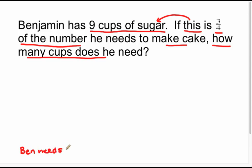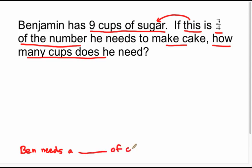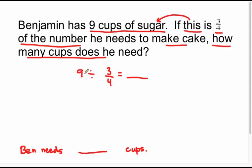So Ben needs a certain number of cups. It says if nine cups of sugar is three-fourths of the number he needs to make the cake. So this is asking me: three-fourths of some number is equal to nine. And that's the division expression created right here — nine divided by three-fourths equals some number.